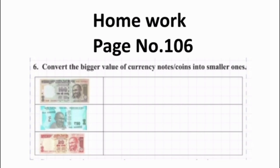Now it's time for your homework. It is sum 6 at page number 106: convert the greater value currency notes and coins into smaller value coins and notes. Thank you. Have a nice day.